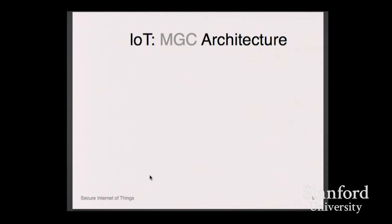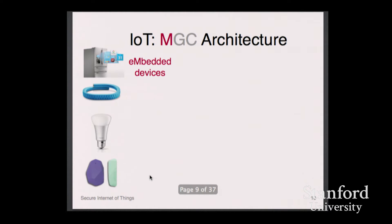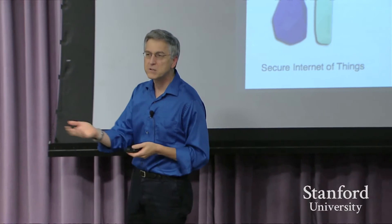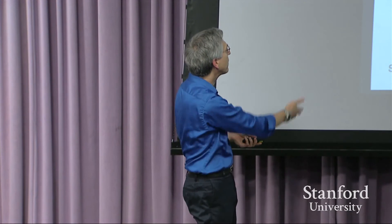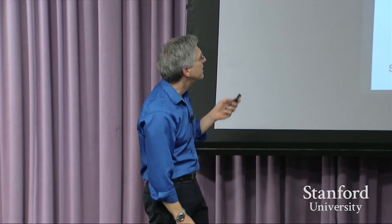What the heck is an MGC architecture? M stands for embedded — because I can't spell. The thing is an embedded system. It usually has a small processor, it's energy restricted, a whole bunch of stuff. So these are parts of the M space.